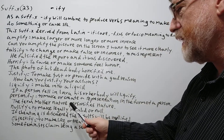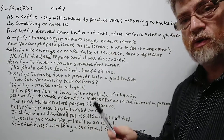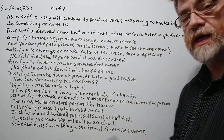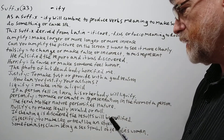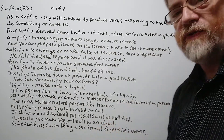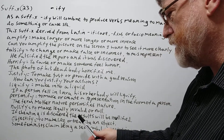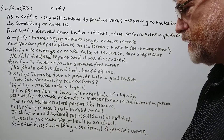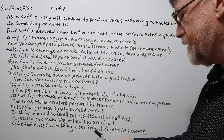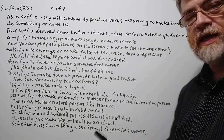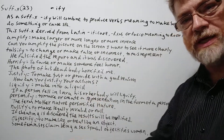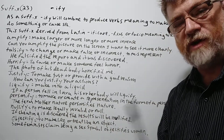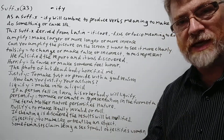Nullify — to make legally invalid or null. Example: 'If cheating is discovered, the results will be nullified.' Objectify — to make or treat like an object, just like a thing. Some feminists claim that being a sex symbol objectifies women, turning them into just an object — a thing to be desired, not really a person.